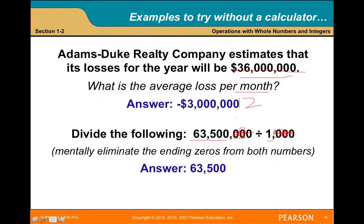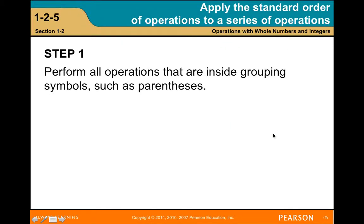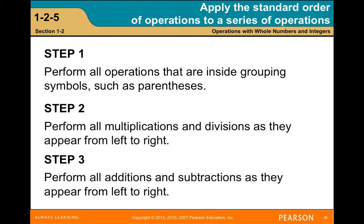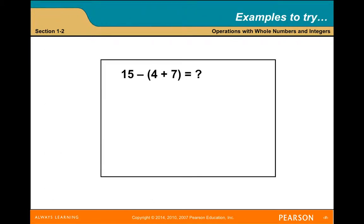For the standard order of operations: first, perform all operations inside grouping symbols such as parentheses; second, perform all multiplications and divisions from left to right; third, perform all additions and subtractions from left to right. For example, 15 minus (4 plus 7): do the parentheses first — 4 plus 7 equals 11, then 15 minus 11 equals 4. For (75 plus 50 plus 35 plus 90) divided by 5: the parentheses sum to 250, divided by 5 equals 50. For 45 minus 4 times 9: multiply first — 4 times 9 is 36, then 45 minus 36 equals 9.